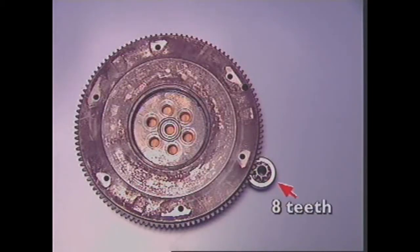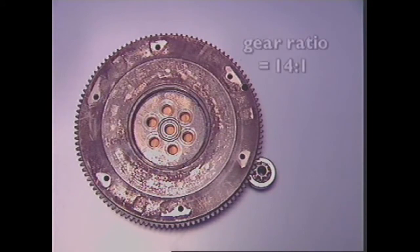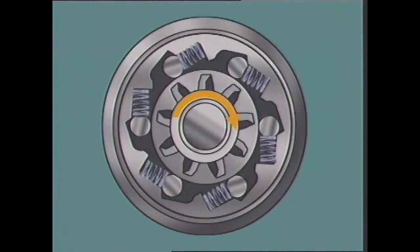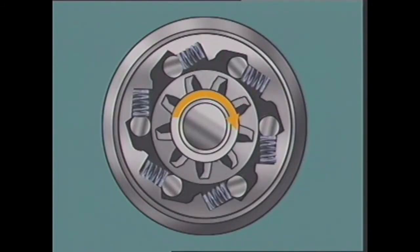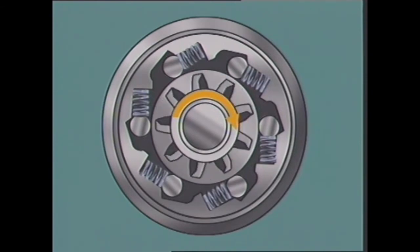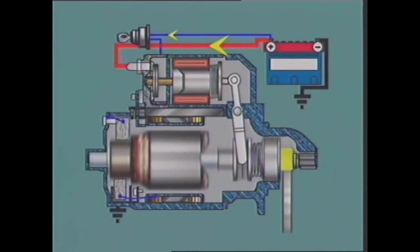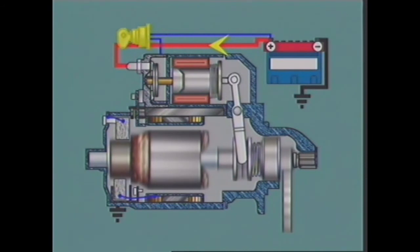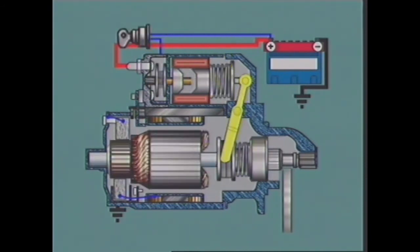The helix forces the pinion further into the ring gear until the pinion contacts a stop ring on the armature shaft. This prevents further axial movement and the driver and pinion now lock to the shaft via the helix and overrunning clutch and transfer the armature rotation to the flywheel. The pinion has only a small number of teeth compared to the ring gear and this means the armature will rotate several times for each revolution of the flywheel. The gear reduction also multiplies the torque from the starter motor. As soon as the engine starts, its rotational speed will eventually exceed the speed of the armature. At this instant, the overrunning clutch breaks the connection between the pinion and the armature shaft and prevents overspeeding and damage of the armature. The pinion remains meshed as long as the engaging lever is held in the engaged position. Releasing the starter switch allows the solenoid plunger return spring to return the engaging lever, driver and pinion to their original position.